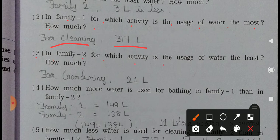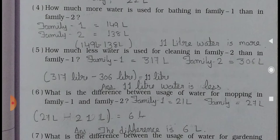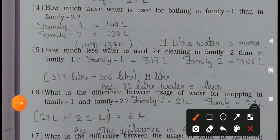Third number: In Family 2, for which activity is the water usage least and how much? For gardening Family 2 is using 21 liter. That is least. Now see the 4th number. How much more water is used for bathing in Family 1 than Family 2? Family 1 is using 149 liter for bathing. Family 2 is using 138 liter for bathing. So subtract both. You will get 11 liter water is more. Family 1 is using 11 liter more water compared to Family 2.